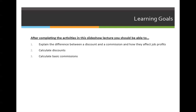So let's get started. Our main objectives are: one, explain the difference between a discount and a commission and how they affect job profits; two, calculate discounts. There are two types of discounts. There's a flat rate discount — so if I offer you $50 off the total price, it's a flat rate and everyone gets $50.